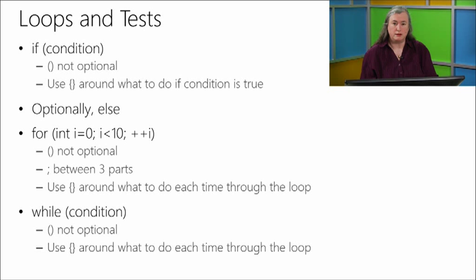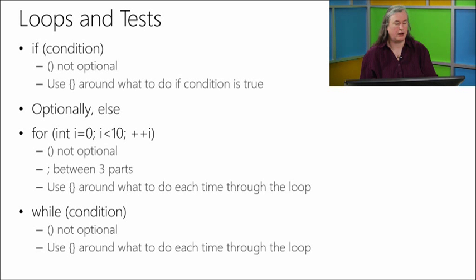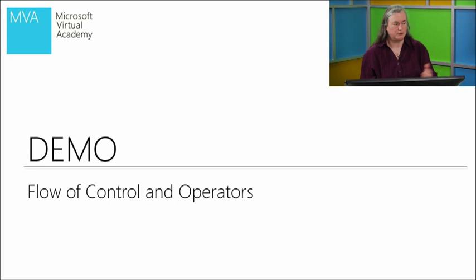We also have a while loop, which is essentially just like a for, but it only has the condition part. It's up to you to do the initialization and also to do whatever moves you on to the next iteration. Other than that, while and for have no significant difference — only a syntax difference. These are easiest to understand by watching the debugger step through some code, so let's do that.